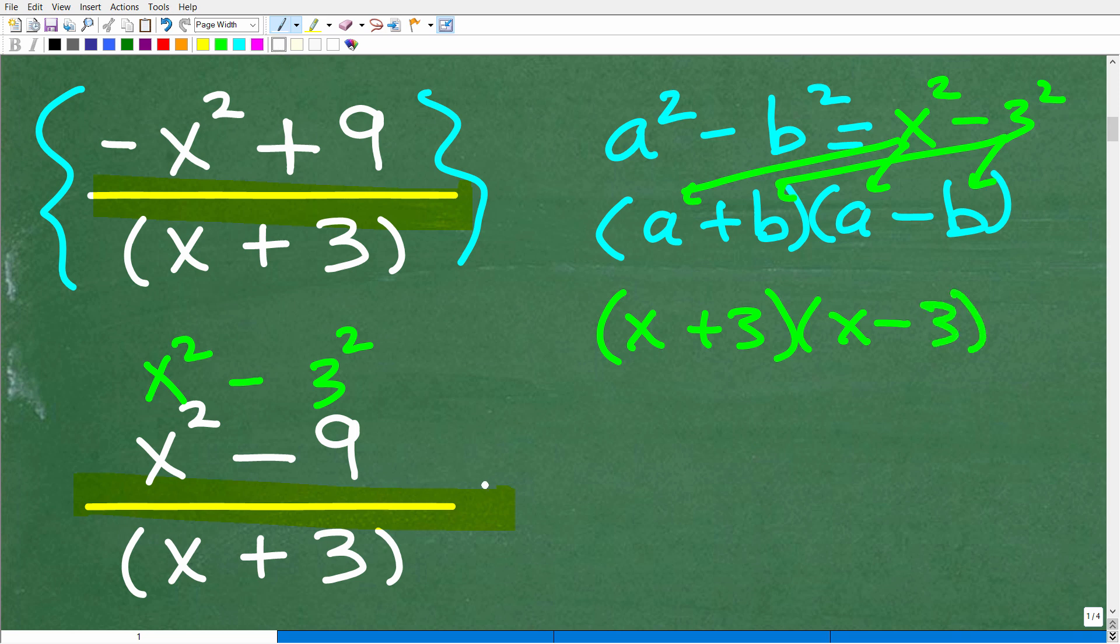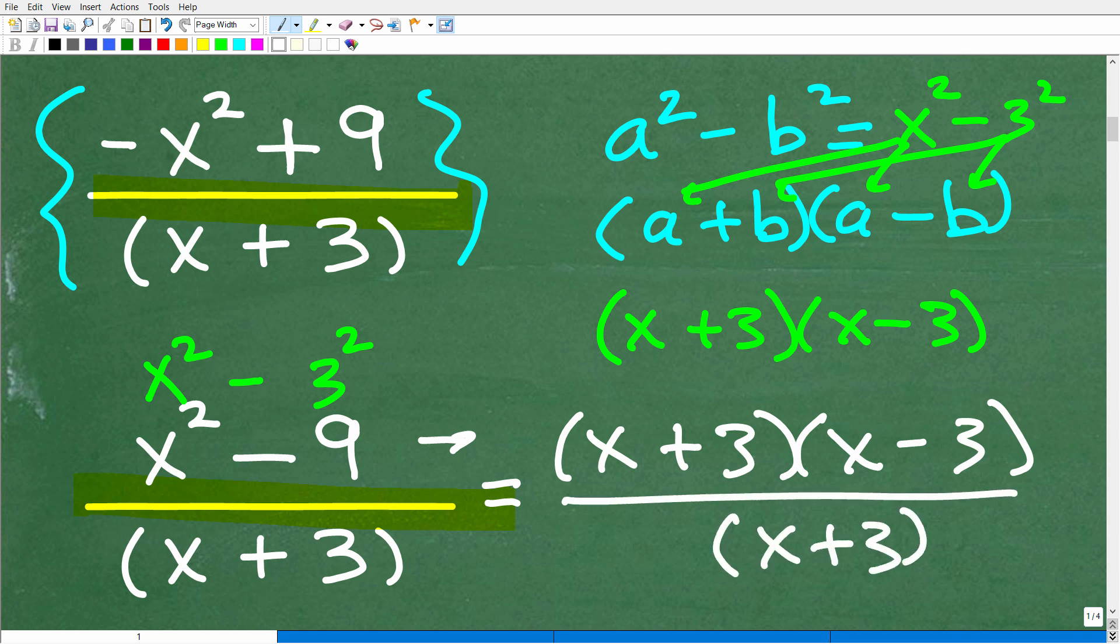Let's actually do that right now and see why this is so awesome to use this formula. So x squared minus 9 equals x plus 3 times x minus 3, and this is all going to be over x plus 3. Right here we have like factors in the numerator and denominator. These two can cross-cancel, and we simplify this down to x minus 3.